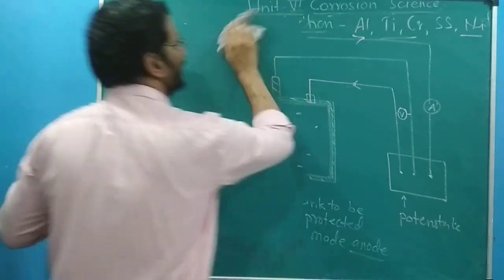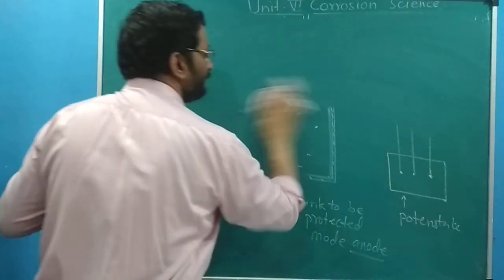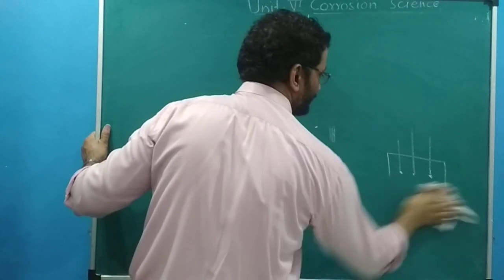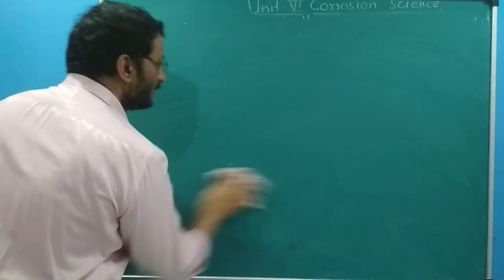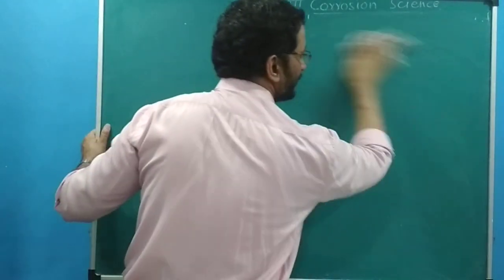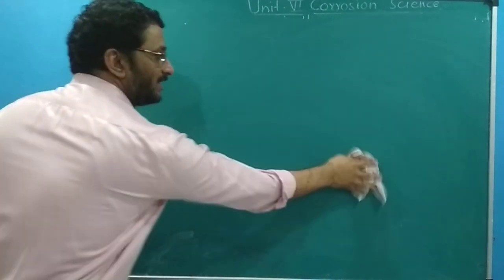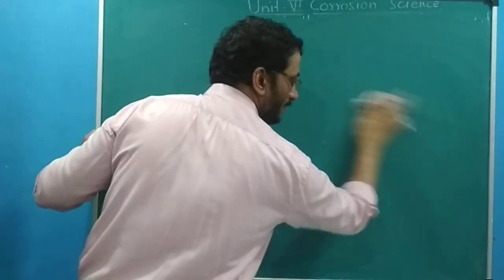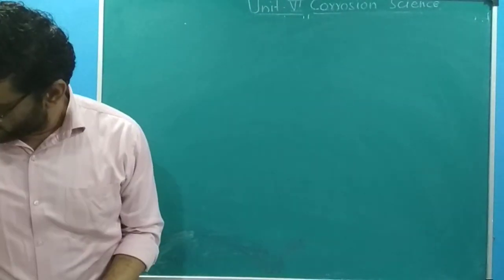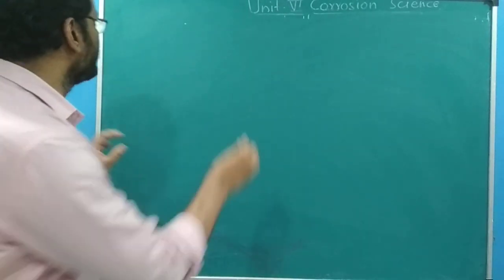This method is called anodic protection, wherein the structure we want to protect is made the anode part of the cell. So two short notes come under cathodic protection and one short note under anodic protection.